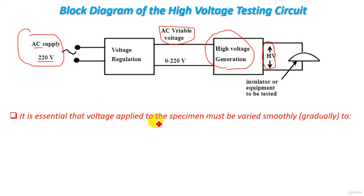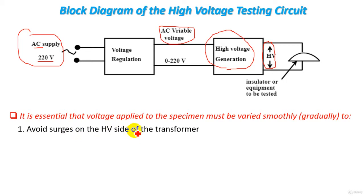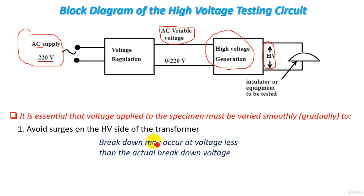It is essential that the voltage applied to the specimen or equipment must be varied smoothly and gradually. Why? We should vary the voltage smoothly and gradually in order to avoid voltage surges on the high voltage side of the transformer — since the high voltage generation stage is essentially a high voltage testing transformer. If the rate of change of voltage is very high, surge current may flow and breakdown may occur at a voltage less than the actual breakdown voltage.